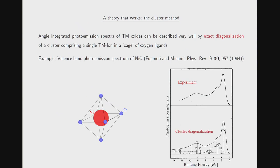Obviously we need to deal better with this Coulomb interaction, and one way to do this is the so-called cluster method, which was pioneered by Fujimori and co-workers. Here you see the angle-integrated valence band photoemission spectrum of nickel oxide, and you can see essentially perfect agreement between experiment and cluster diagonalization.